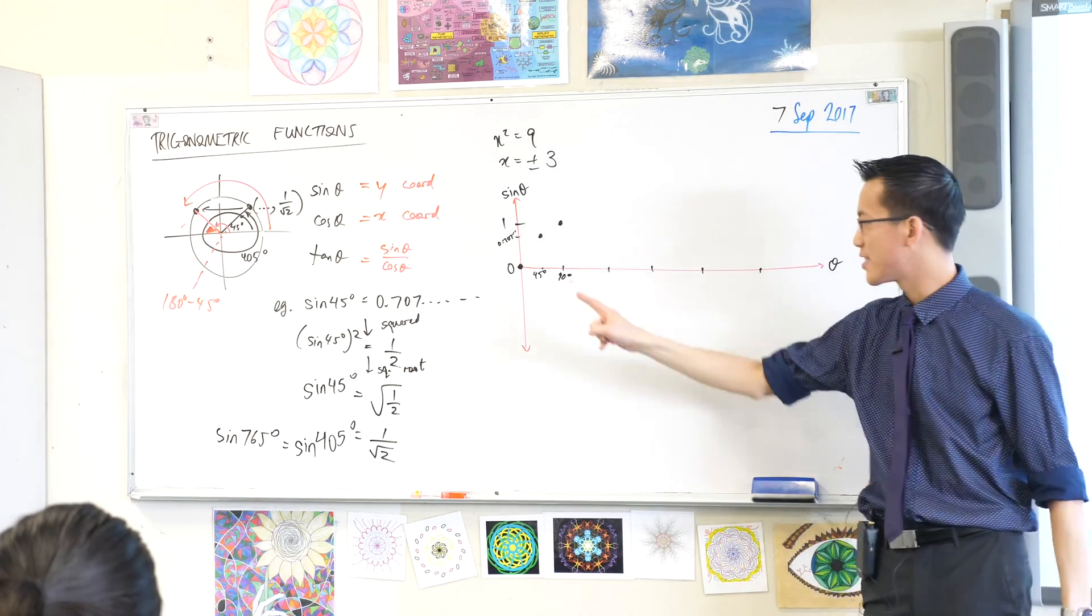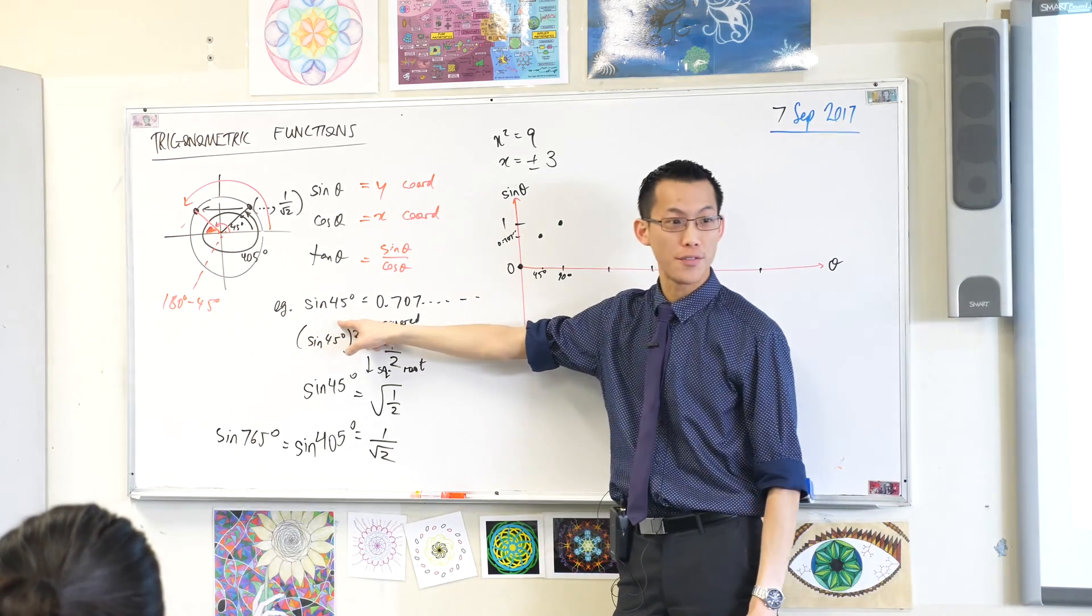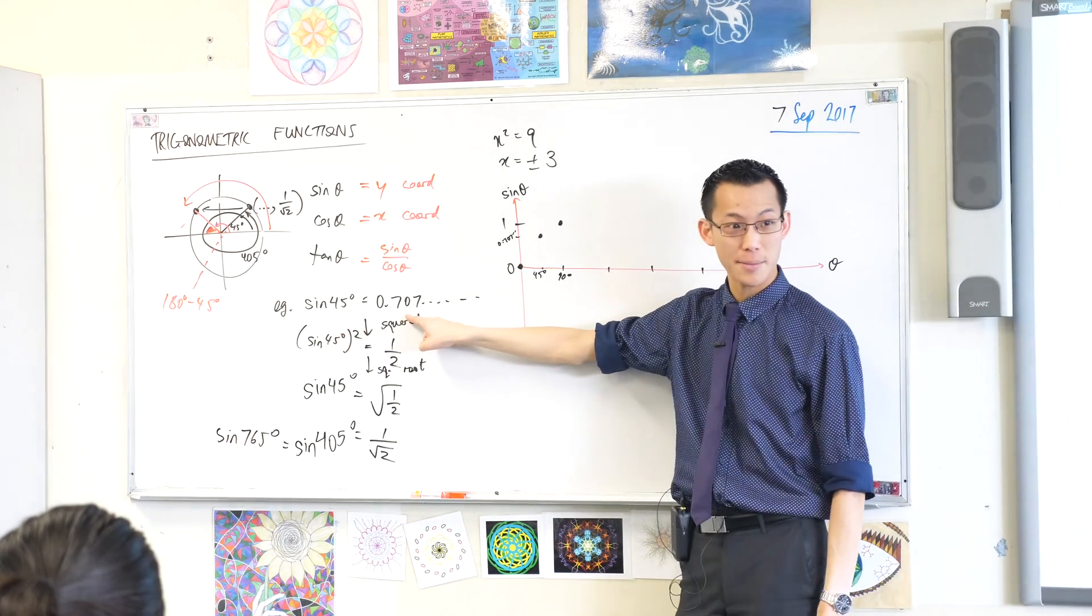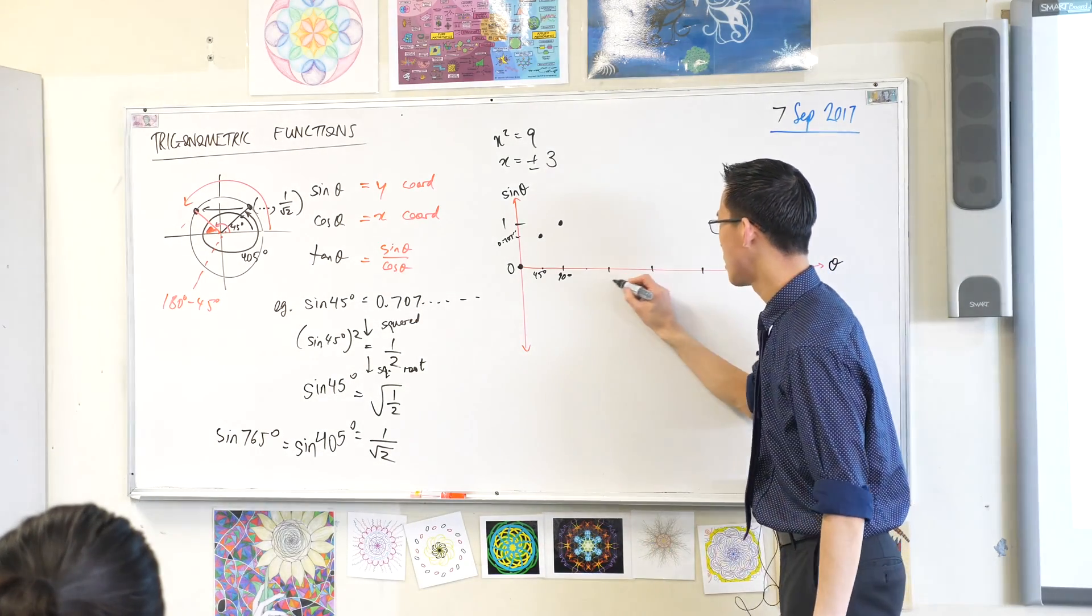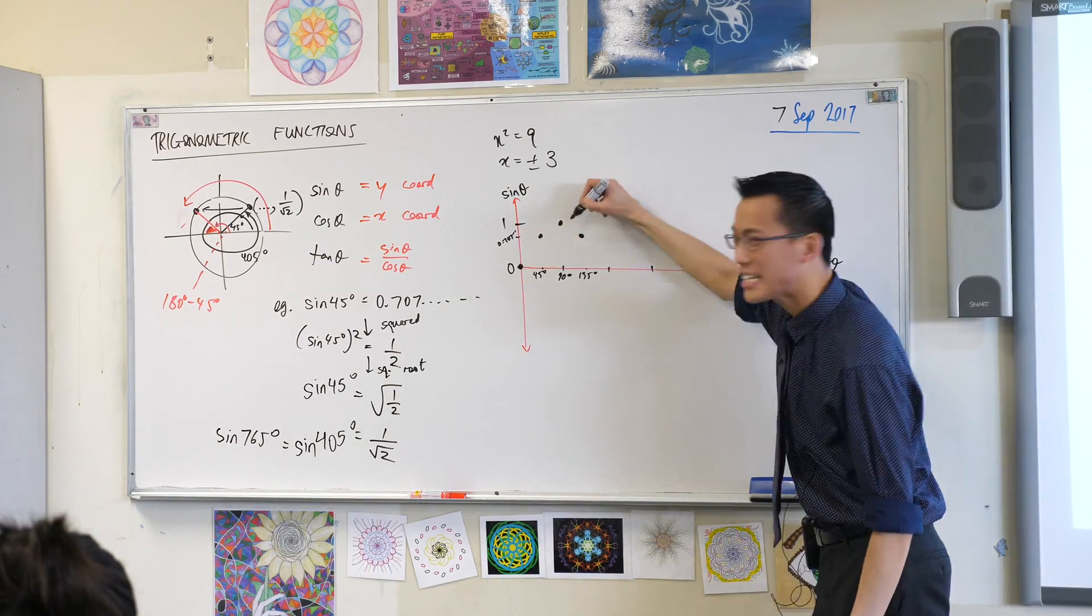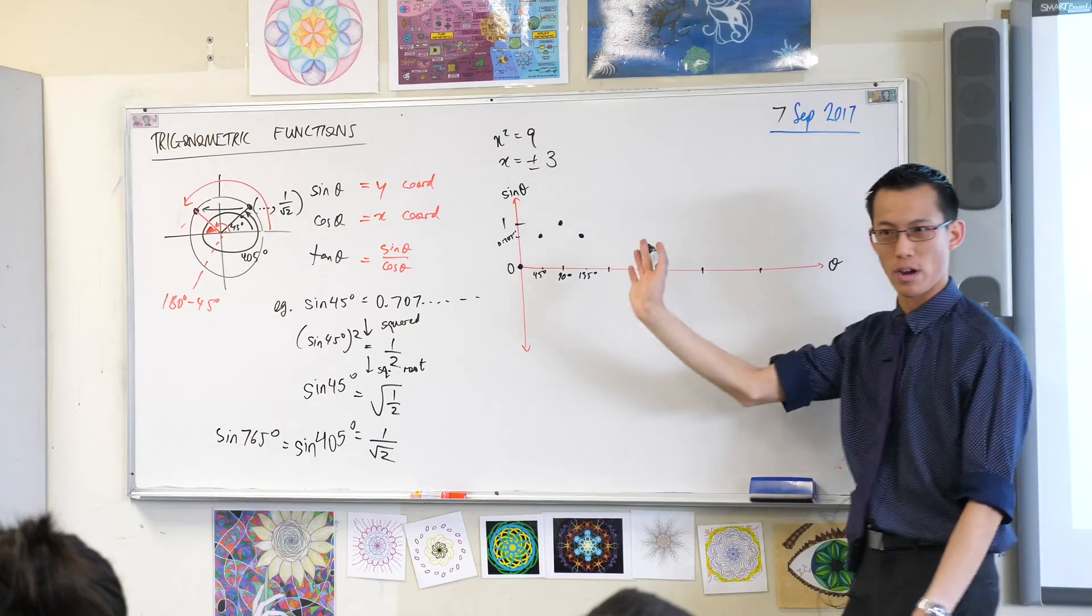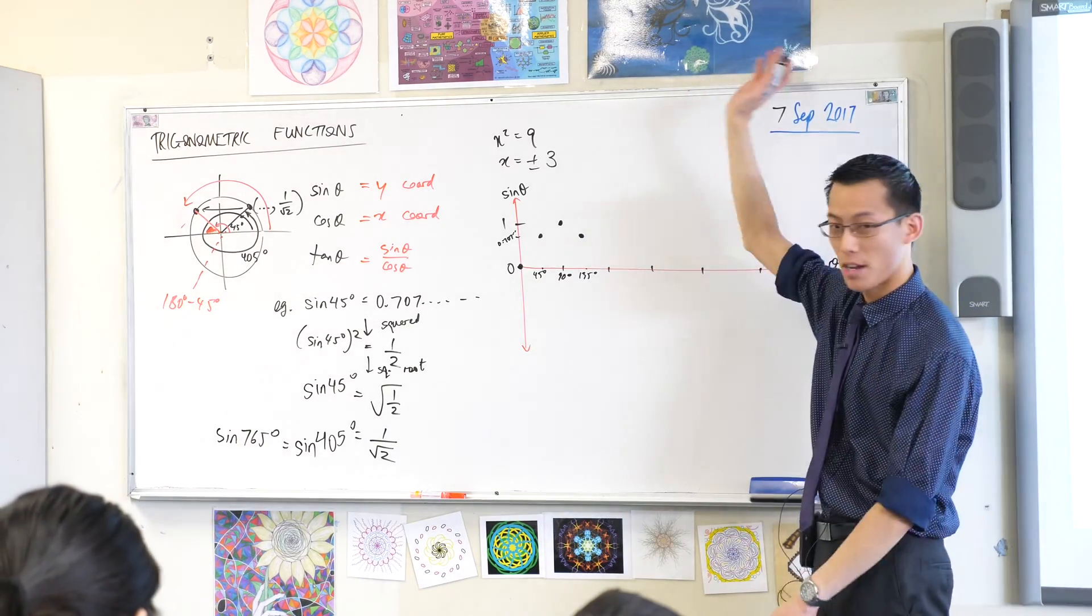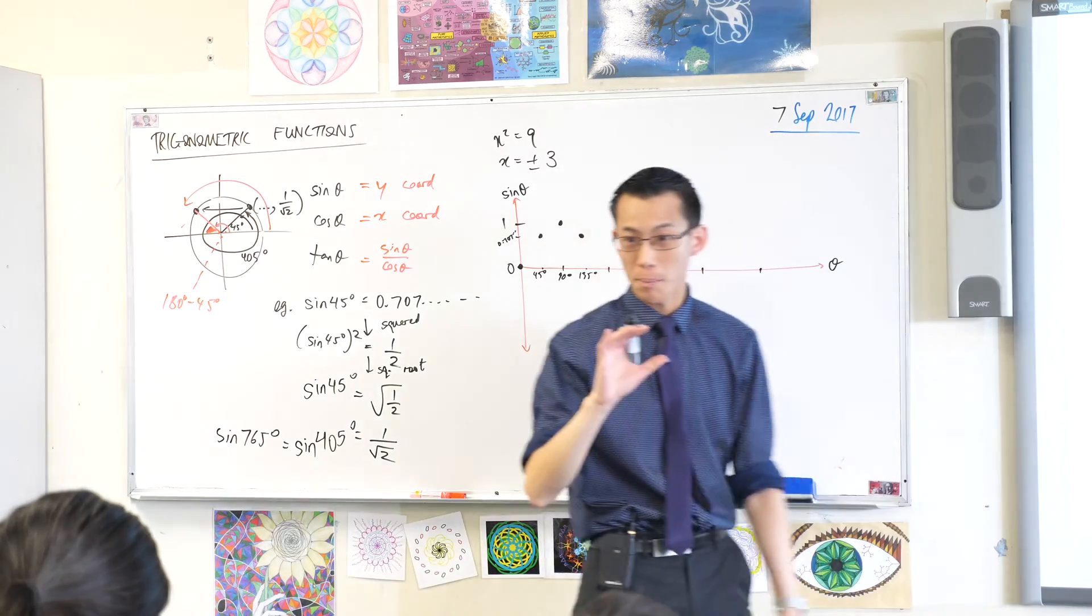And you can see that because as we keep going, you guys told me that sine 135 is the same number. You come back, right? So 135 is here, like that. It's coming down. It's strange. When we looked at parabolas, they just kind of went up and up and up. Cubics went up and up and up. This guy is sort of looping back.